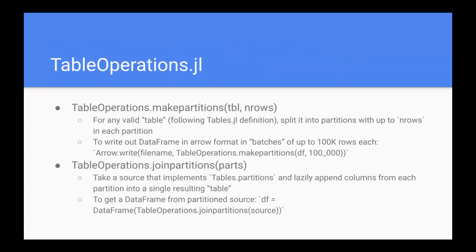We also introduced some more convenience operations in dealing with partitions in the TableOperations package, which is a collection of various utilities that work on generic tables. So the first one is make_partitions where you can take any valid tables table and you can say hey, I actually want to chunk this up into batches or partitions with up to n rows. So you give it a number, 100,000, and you then get back a valid partitioned table that you can then iterate the partitions of, and each one will be 100,000 rows. So that's make_partitions.